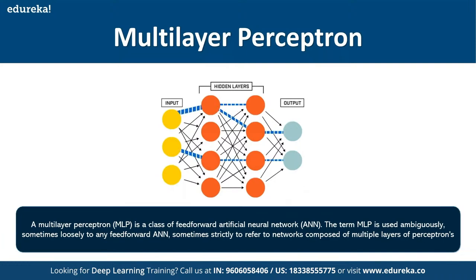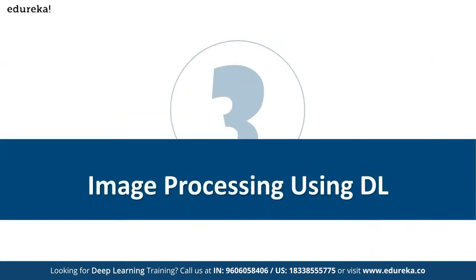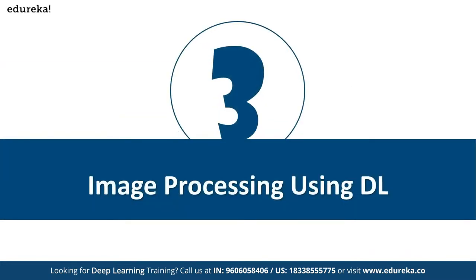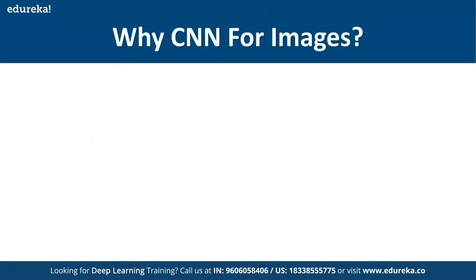In our scenario we'll make use of deep learning neural networks to perform image processing — working with X-ray images. To work with image data we'll use an architecture known as convolutional neural network.